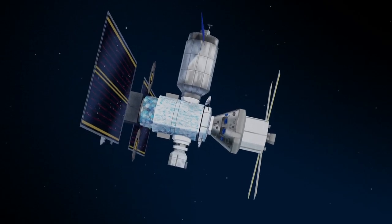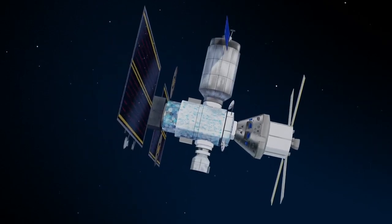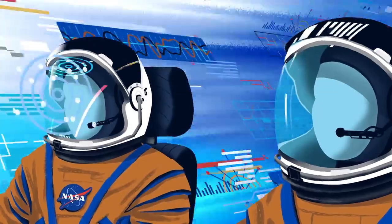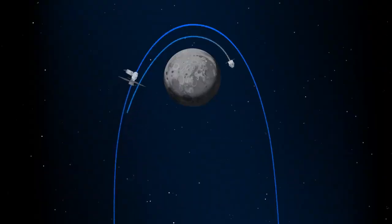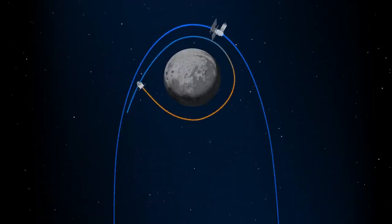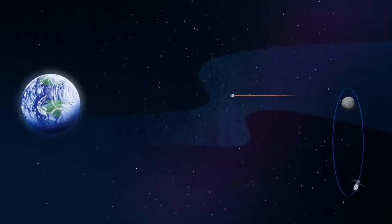Once back aboard the Orion spacecraft and undocked from Gateway, the crew fire their engine once to break out of the halo orbit, and once again to sling the spacecraft around the Moon, placing it on a multi-day trajectory back towards Earth.